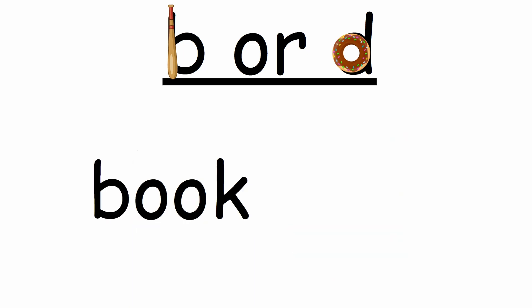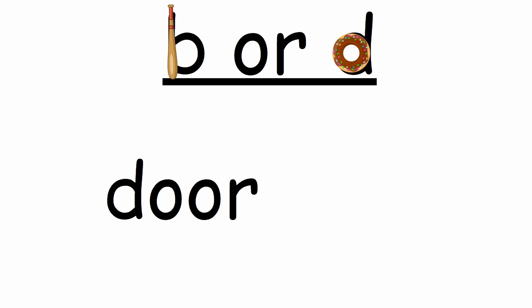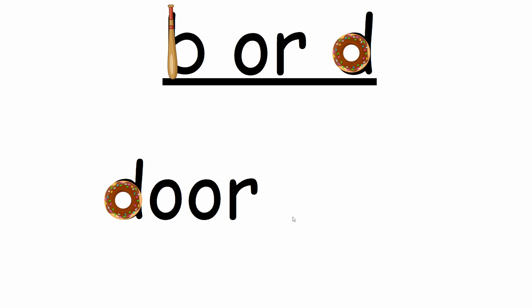What does this word start with — a b or a d? It starts with a b because it has a bat in the beginning. So let's go ahead and read our word: book. What's our word? Book. Very good. What letter does this word start with? It starts with a d because it has a donut in the beginning. Let's go ahead and read our word: door. What's the word? Door. Very good.